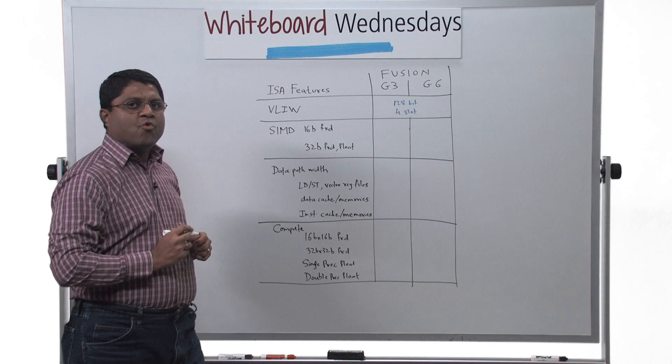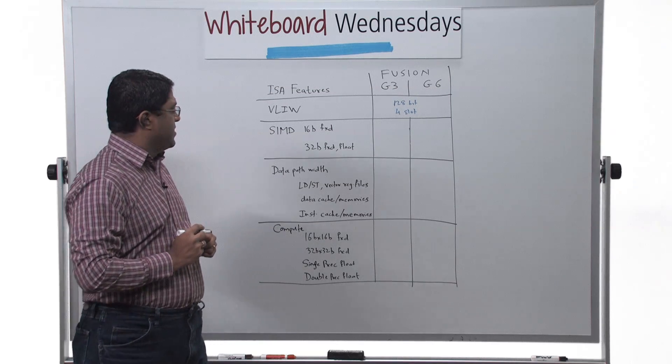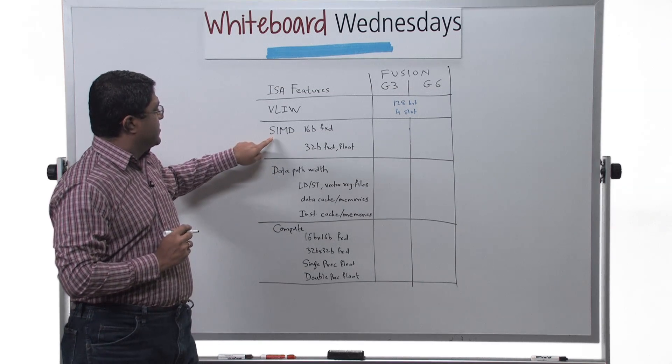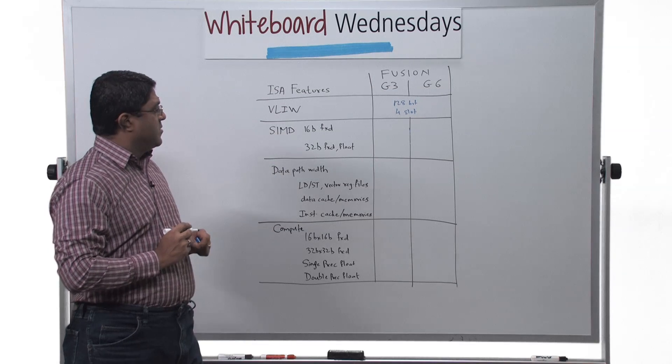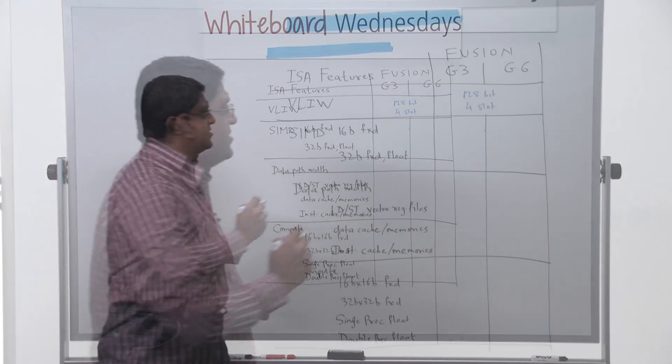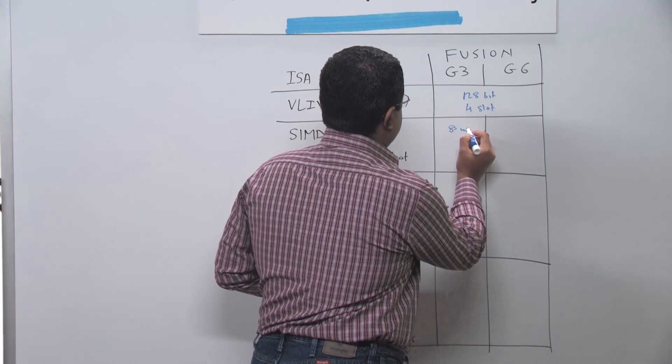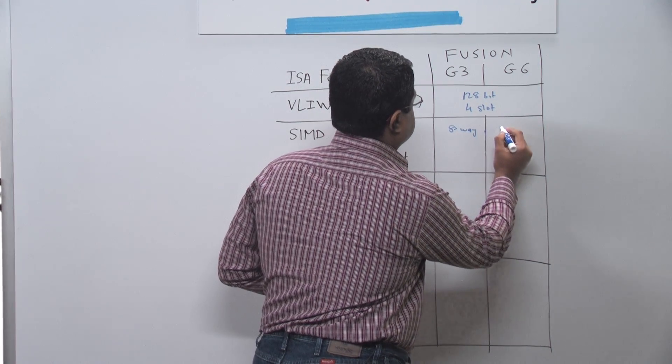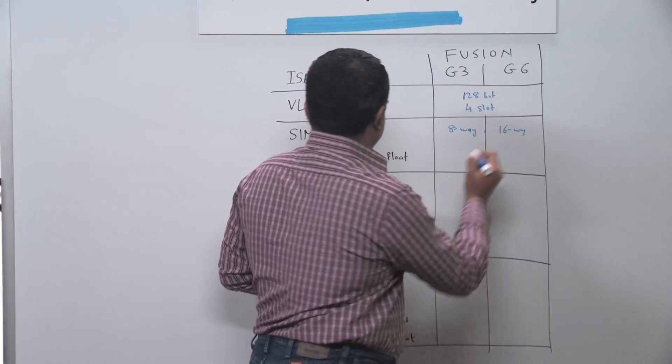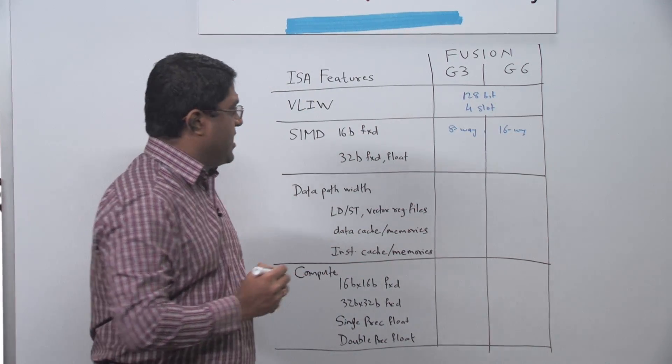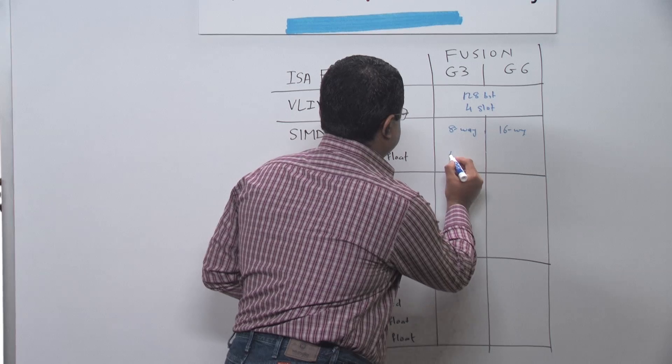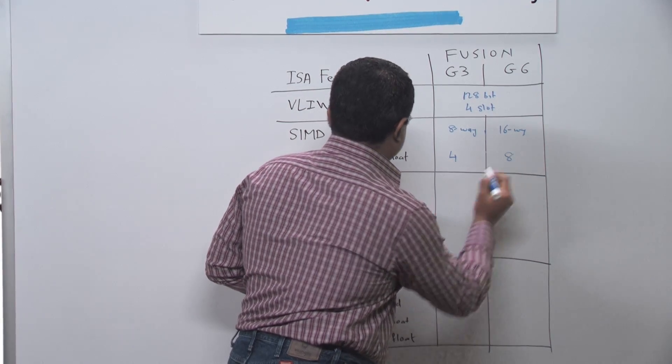So they can issue four operations in one instruction bundle. They are single instruction multiple data machines and for 16-bit elements the Fusion G3 is 8-way whereas the Fusion G6 is 16-way. For 32-bit fixed point elements the G3 is 4-way whereas the G6 is 8-way.